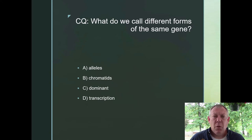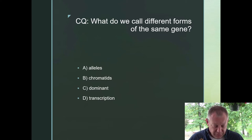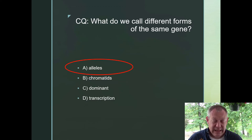What do we call different forms of the same gene? Alleles, chromatids, dominant, or transcription? Different forms of the same gene are called alleles.